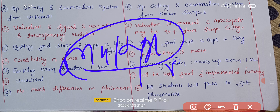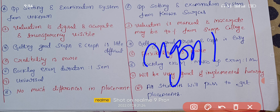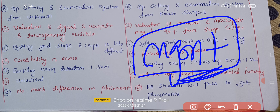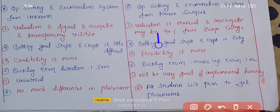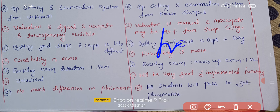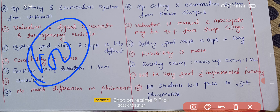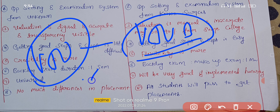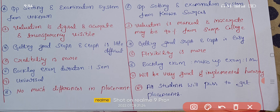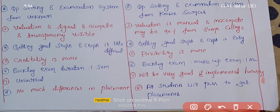There is not much difference between VTU and autonomous institutions overall. Autonomous status is more of a management preference — it gives more flexibility to make changes and manage fees as they want. However, autonomous colleges are still affiliated to VTU, with 80% of the curriculum following VTU norms and 20% being their own.